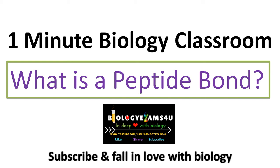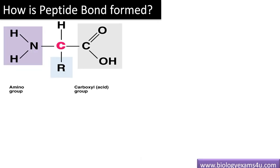Hi friends, welcome to one minute biology classroom from biologyexams4a.com. Today's topic is: what is a peptide bond? As we all know, this is an amino acid — that's the central carbon, and there is a hydrogen, then an amino group and a carboxyl group, and this is the side chain R.